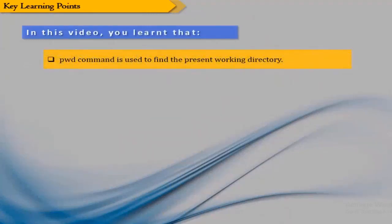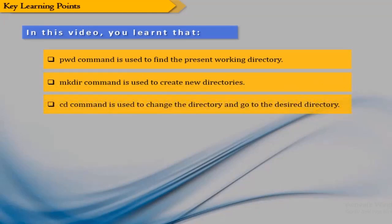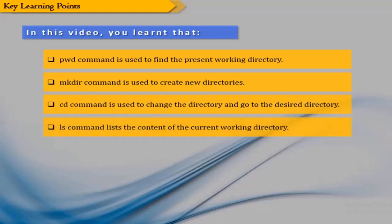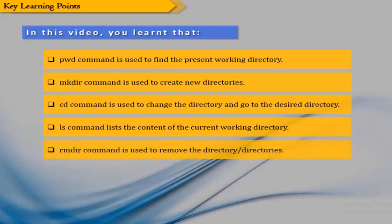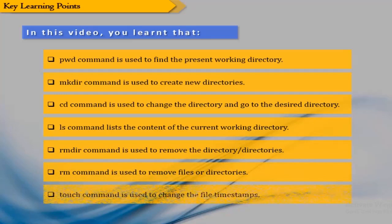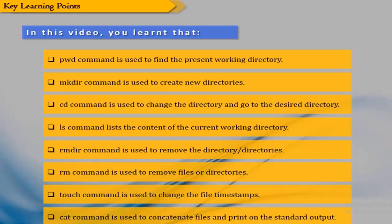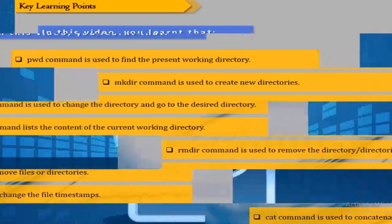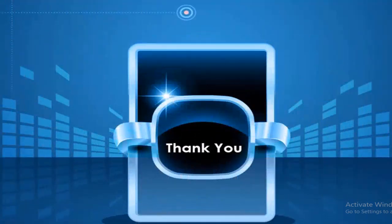In this video you learned that: pwd is used to find the present working directory; mkdir is used to create new directories; cd is used to change the directory; ls lists the contents of the current working directory; rmdir is used to remove empty directories; rm is used to remove files or directories; touch is used to change file timestamps; and cat is used to concatenate files and print on the standard output. Thank you for watching this video on basic UNIX commands.